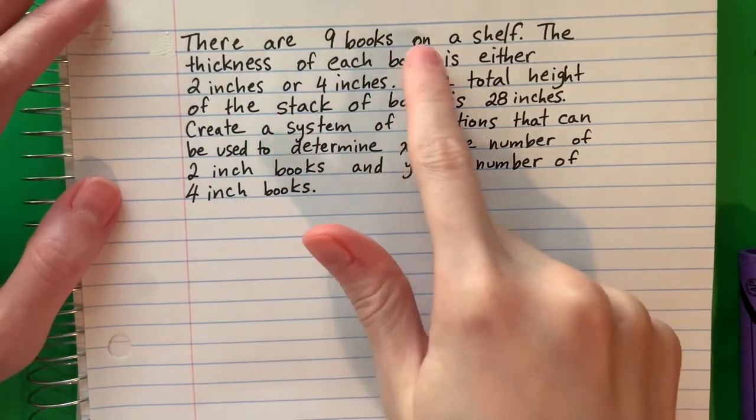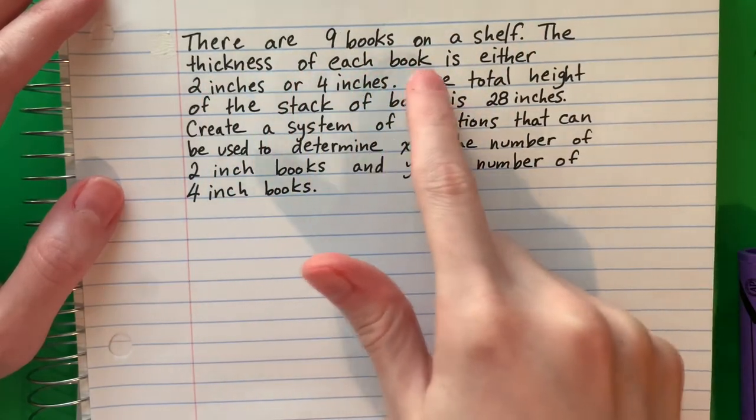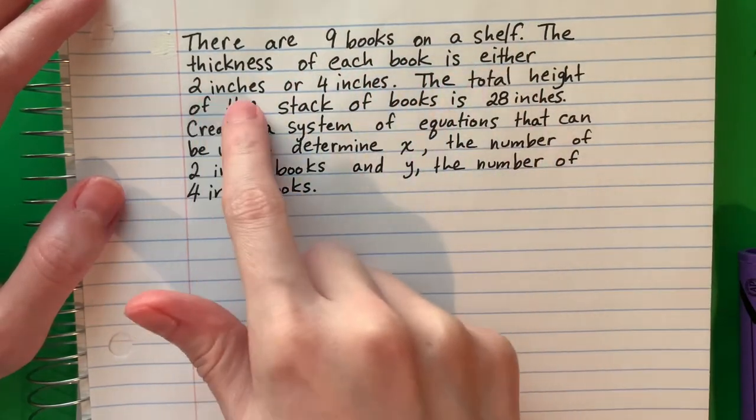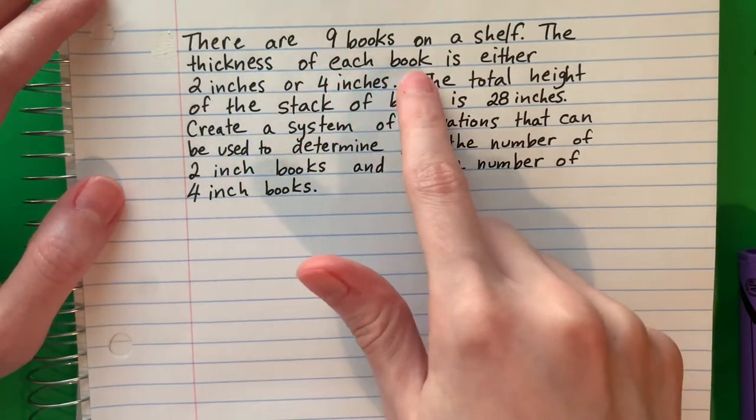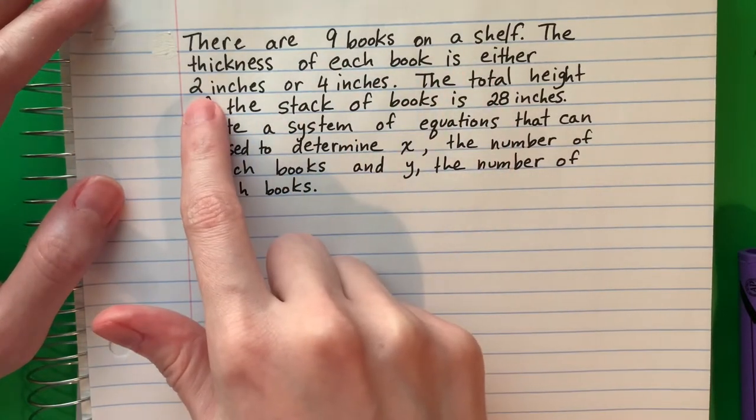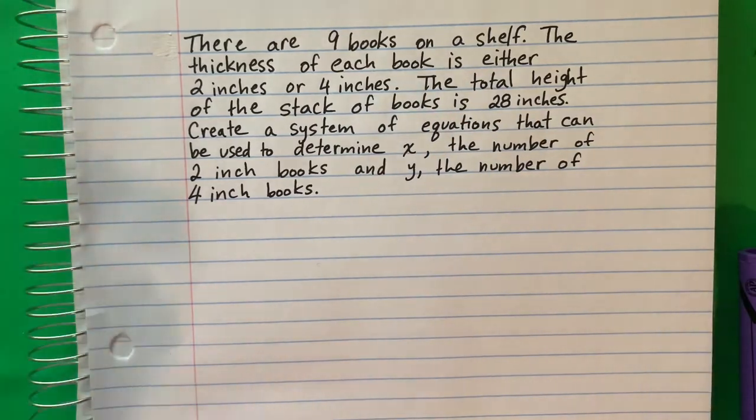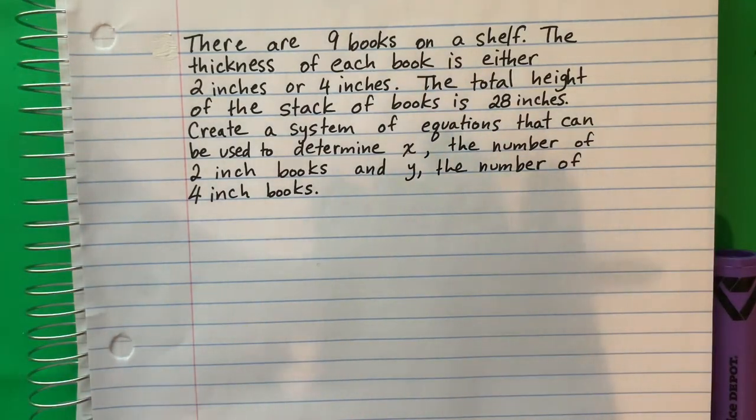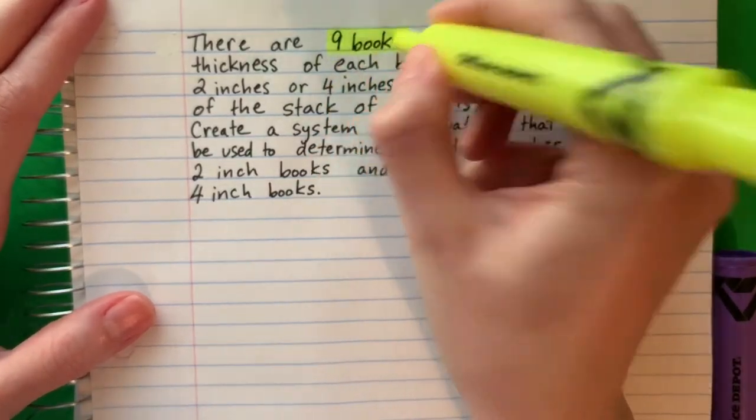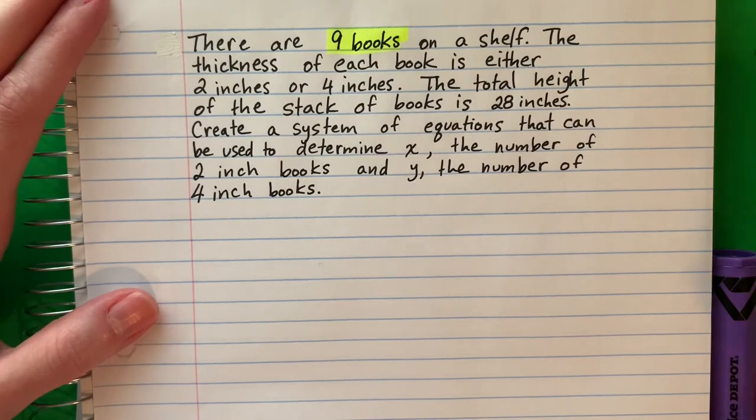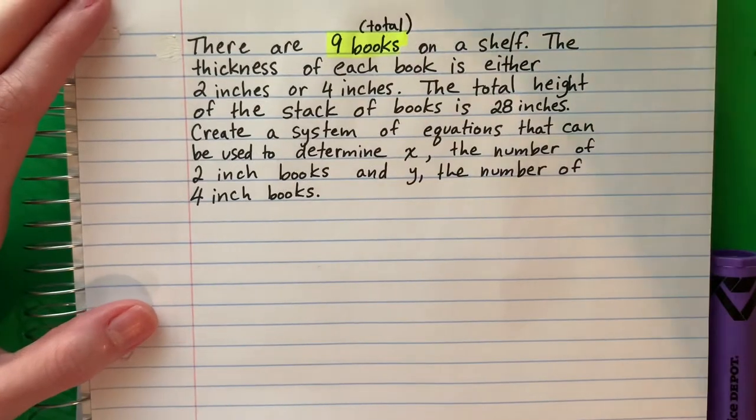There are nine books on a shelf. The thickness of each book is either two inches or four inches. So let's go ahead and write down what's important. There are nine books, total.